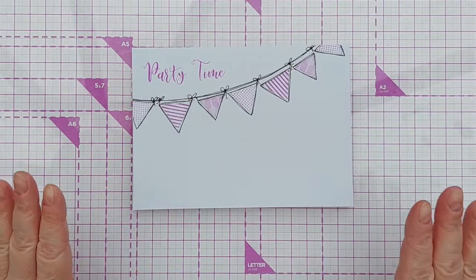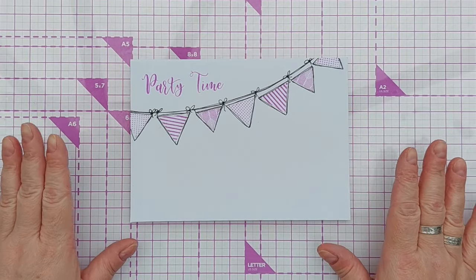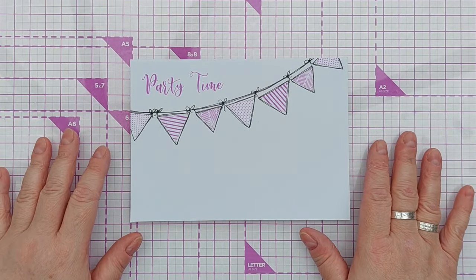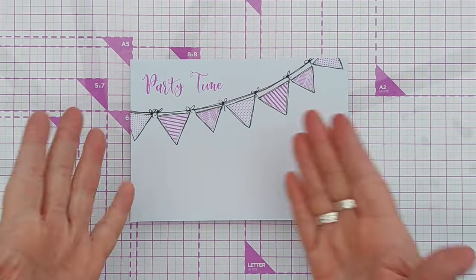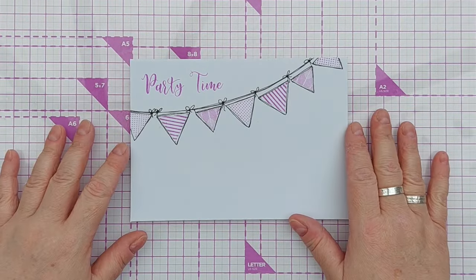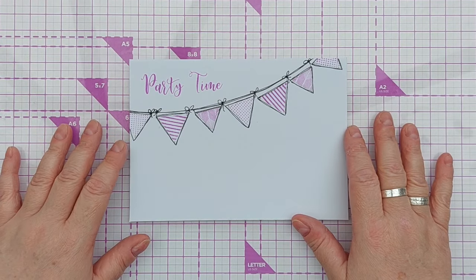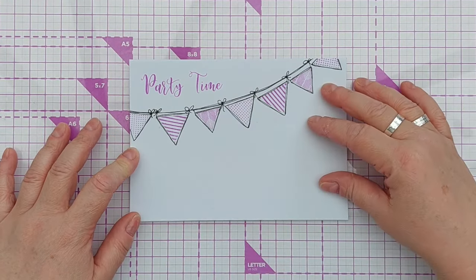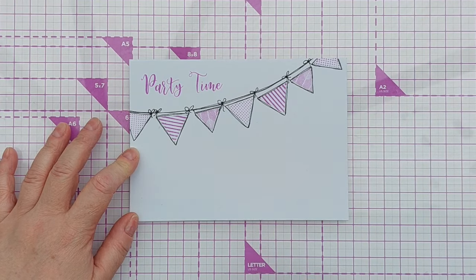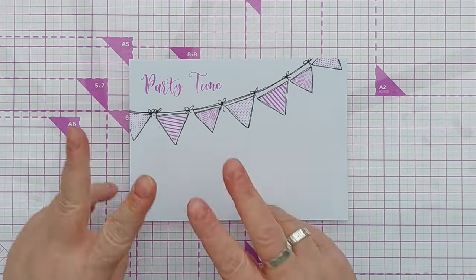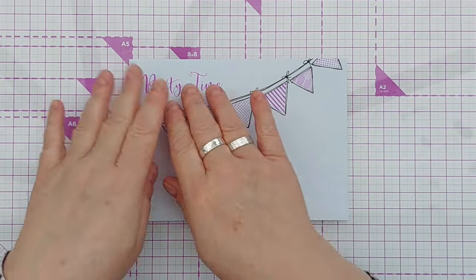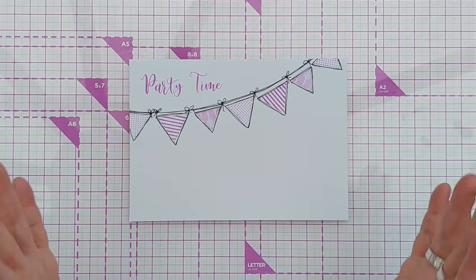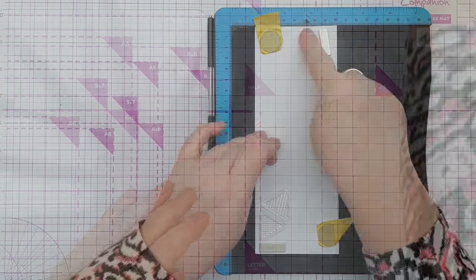So that is a very clean, very simple party invitation made with the triangular stamps, a sentiment stamp, and a pen. You can't really get much more clean and simple than that. There's lots of empty white space here. If you weren't worried about white space and you wanted to bring in a bit more energy, you could splatter on some ink or some metallic ink. You could heat emboss the party time.